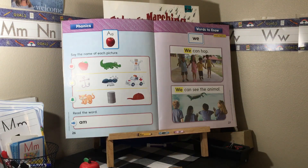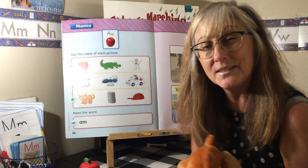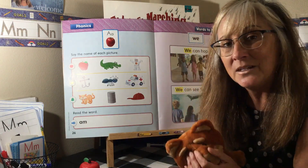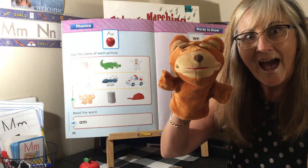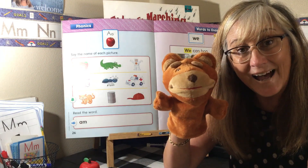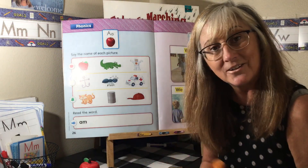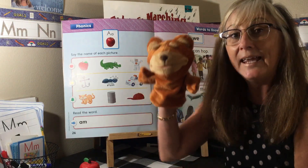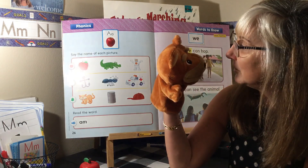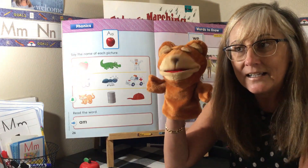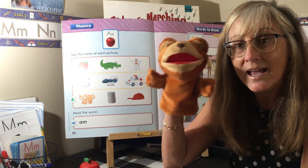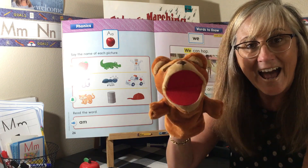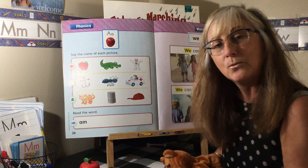I'm going to grab my puppet because we're going to do some sounds in words and see if we can hear the sound 'ah' in the word cat. He's going to make all the sounds in cat — did you hear him say 'ah'? In the middle of the word cat is the letter A. Now watch me do can — all the sounds in can. Did you hear 'ah' in the middle? The word can has an 'ah' in the middle.